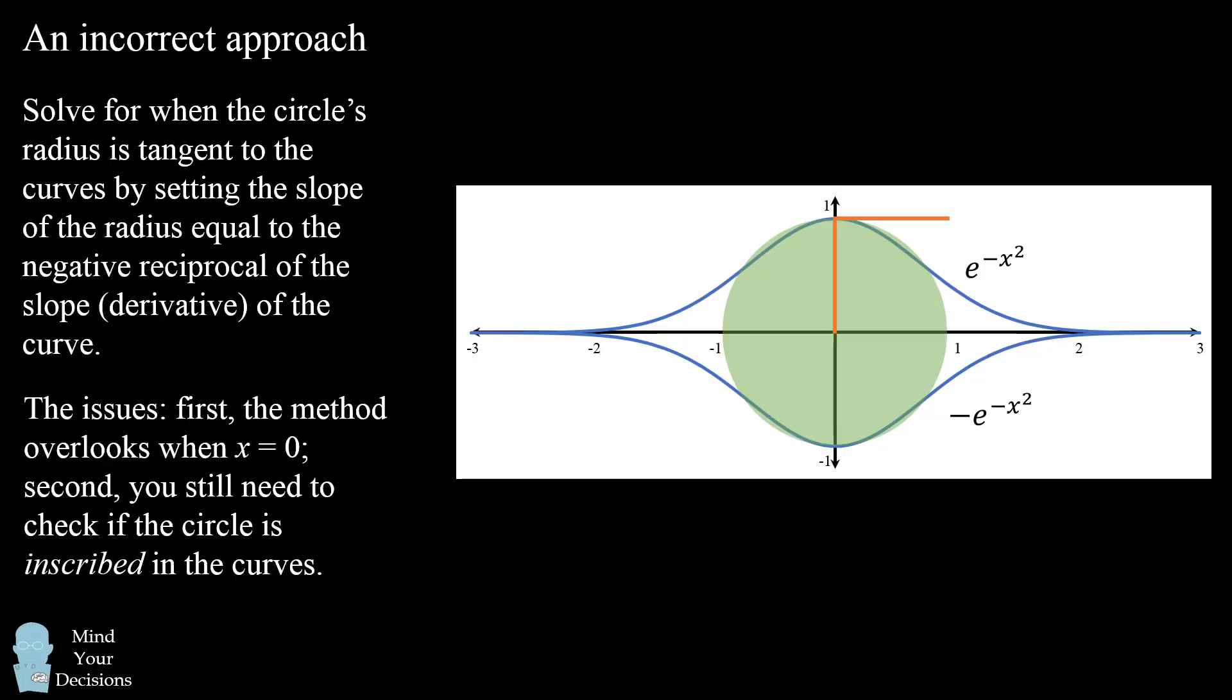Now if you were to use this incorrect approach, you would actually find another solution which does correspond to the correct answer. But this will be an insufficiently justified answer because you might be overlooking other cases, and you would still have to show why the circle is completely inscribed between the curves. So this is not a valid approach to solving this problem.